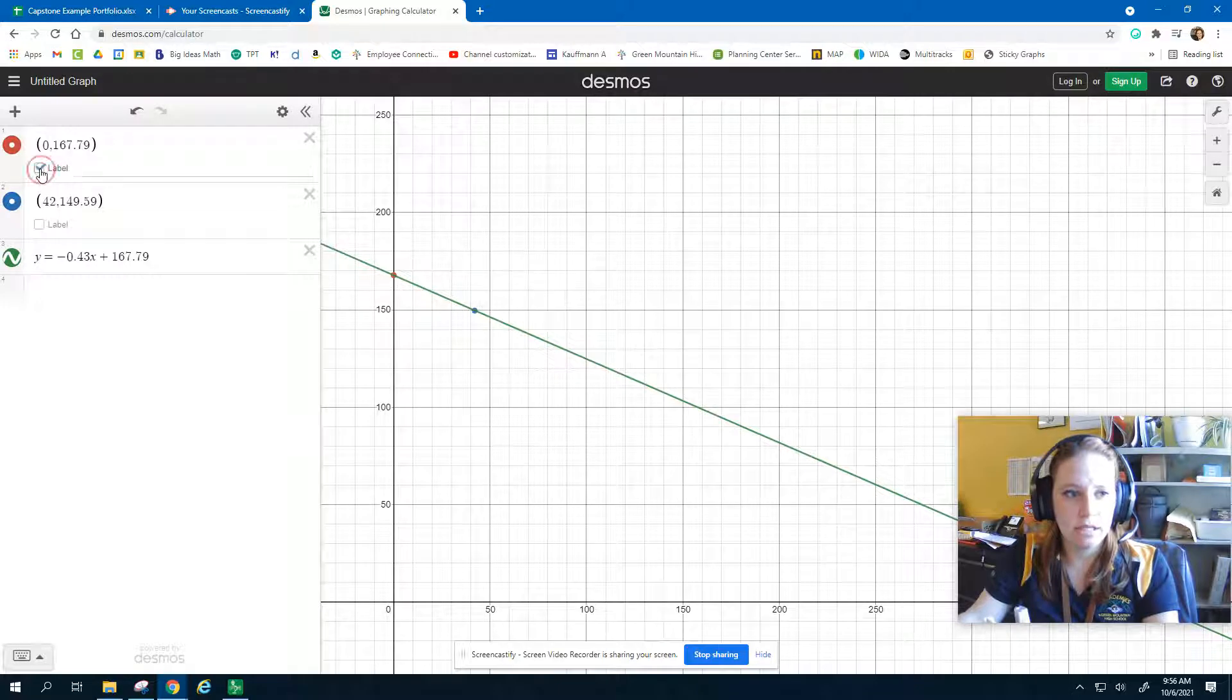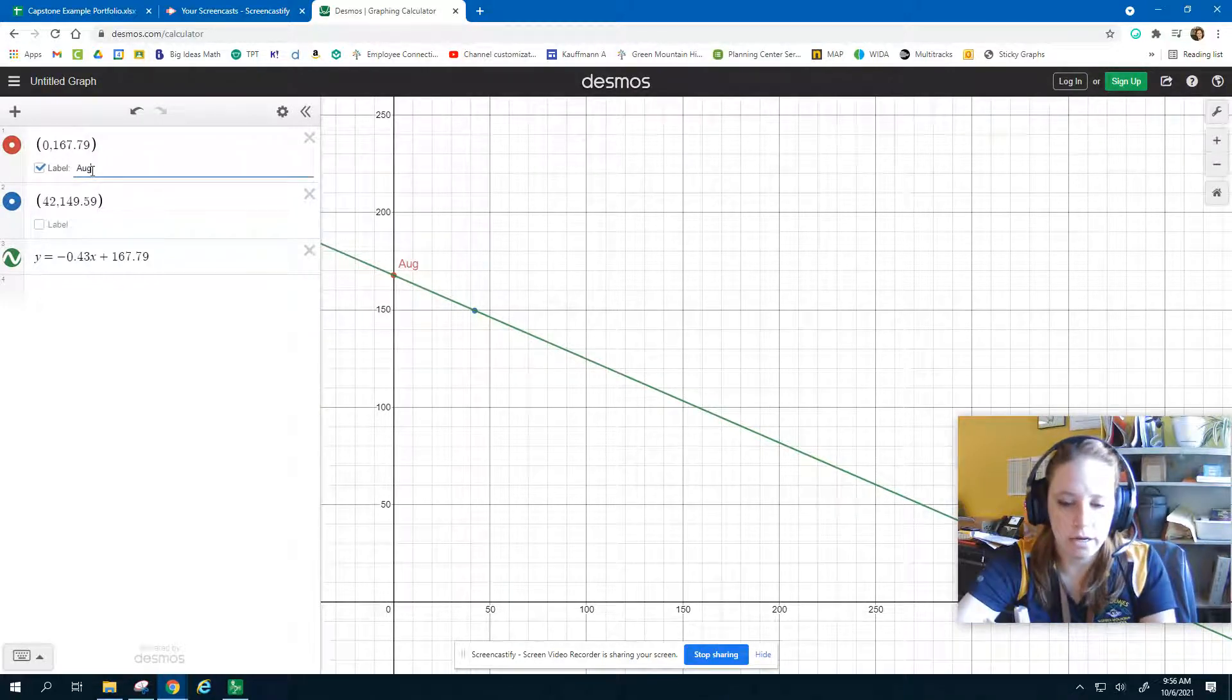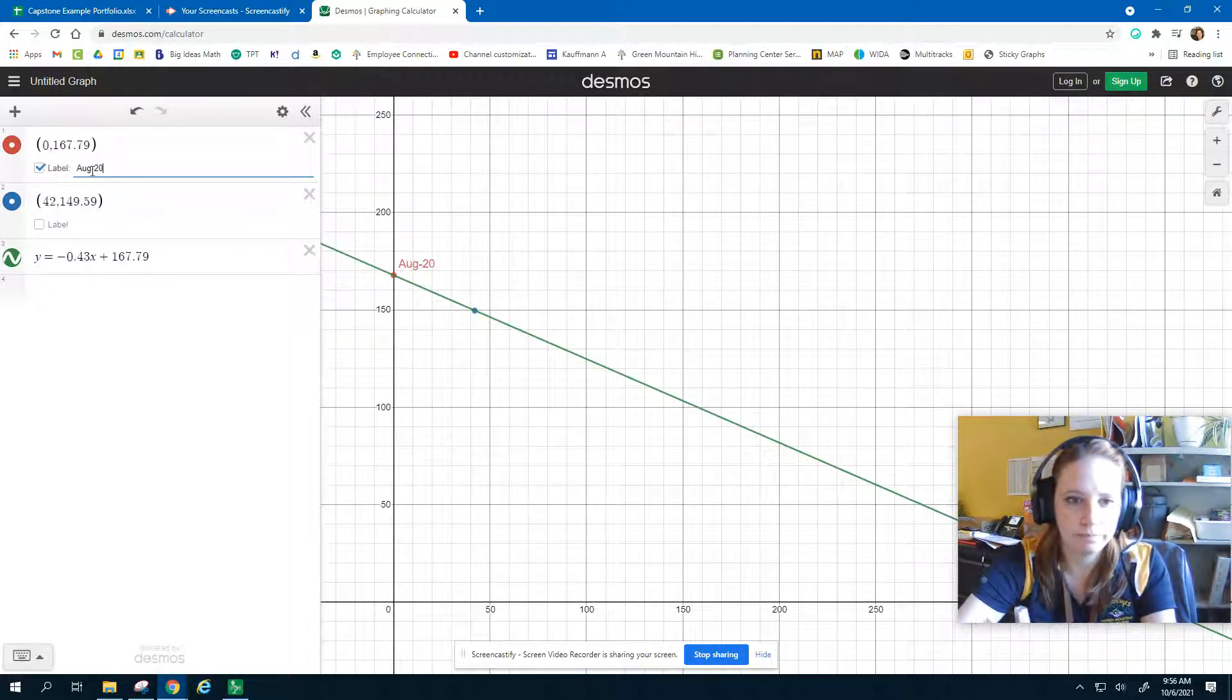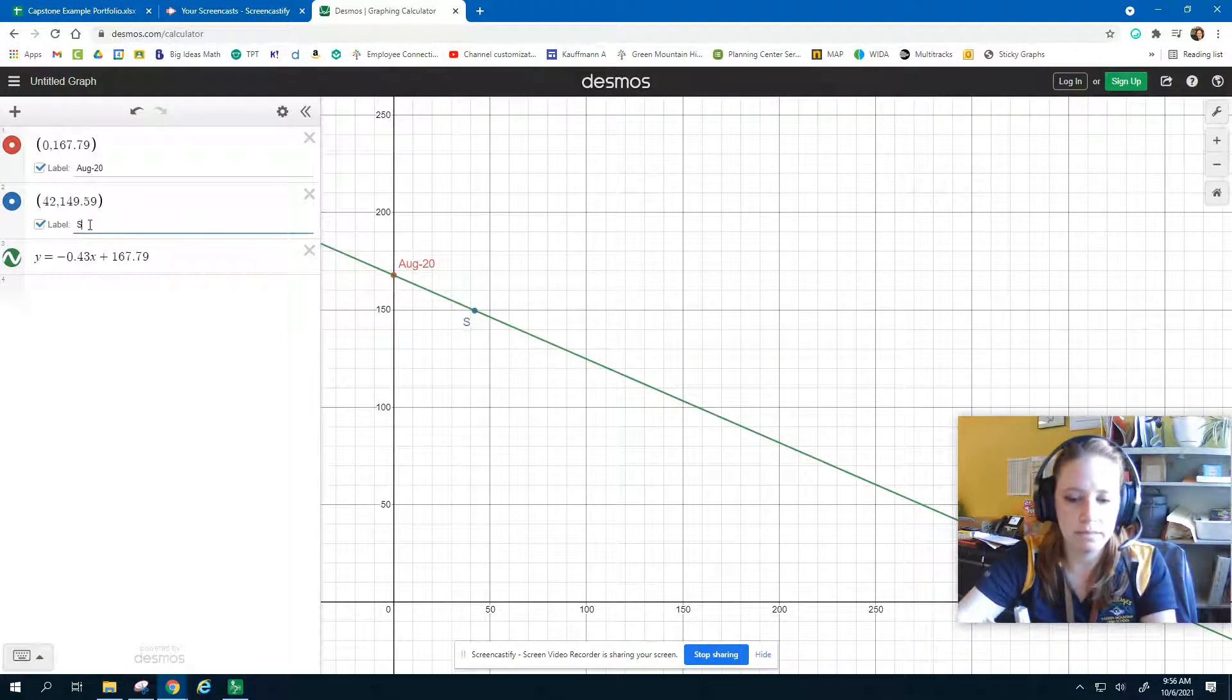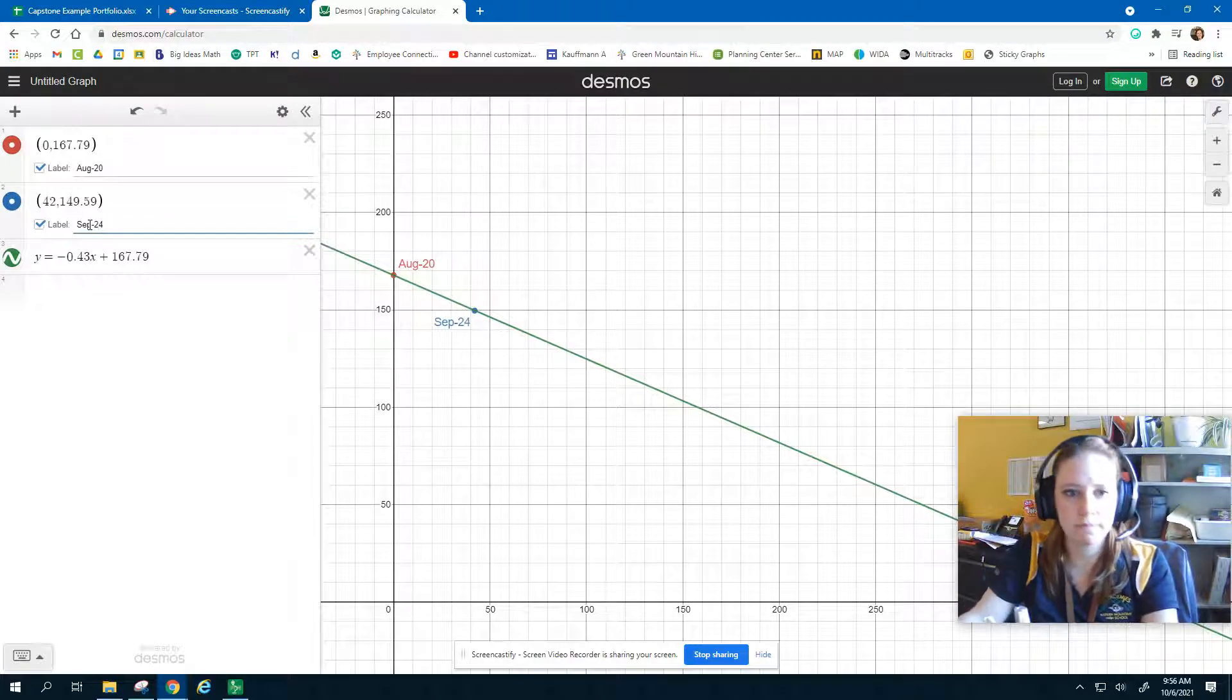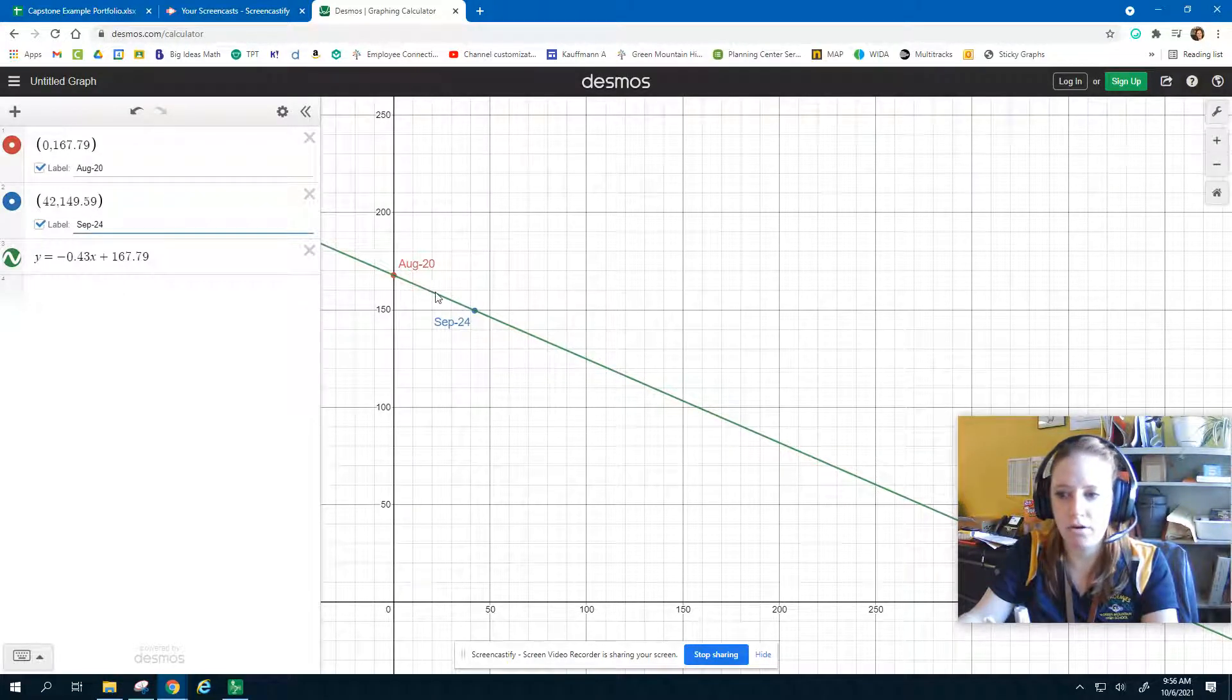Now we can add labels to this. This label would have been August 20th, and this label would be September 24th. Now it popped it onto my graph.